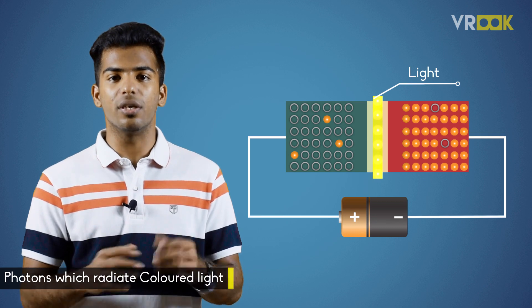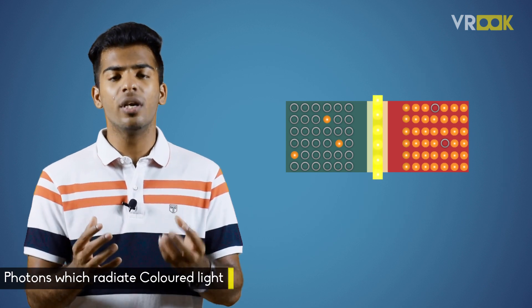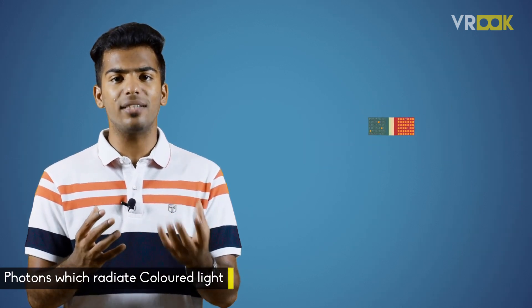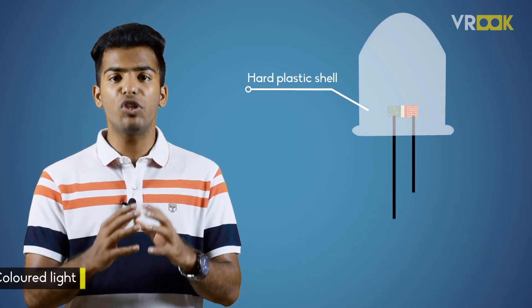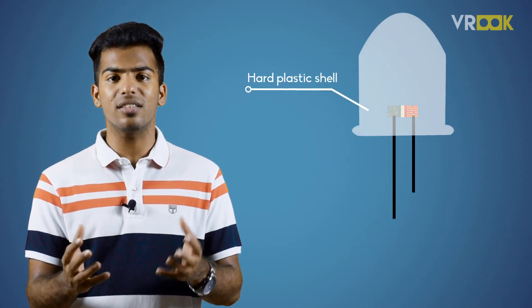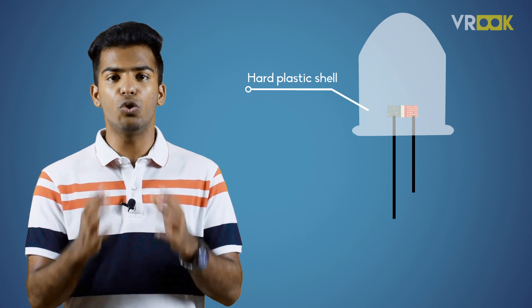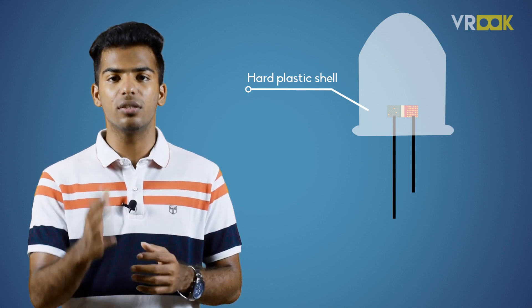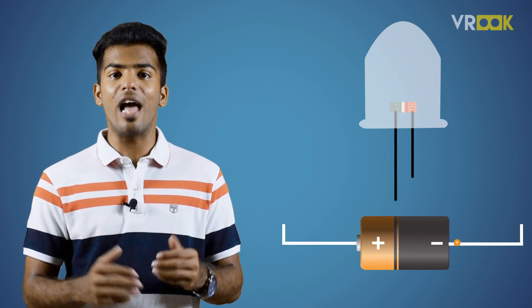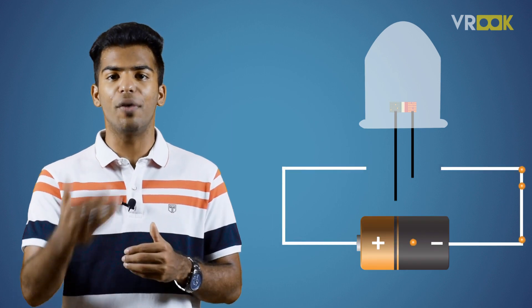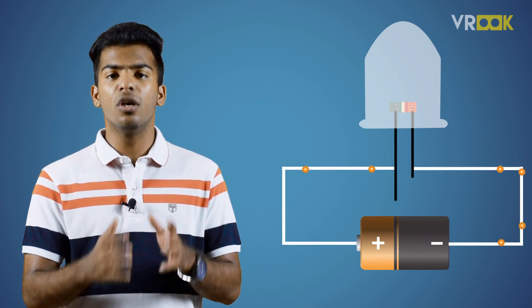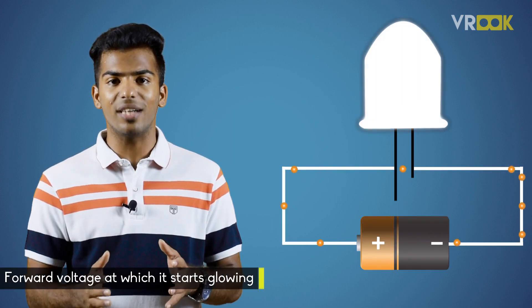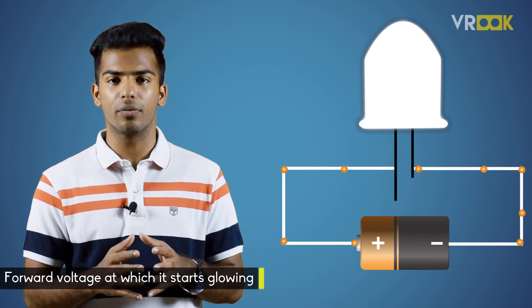This junction is enclosed in a hard plastic shell, which also acts as a lens to focus the light. Now coming to the working part — every LED will have its own forward voltage, which is the voltage at which it starts glowing.